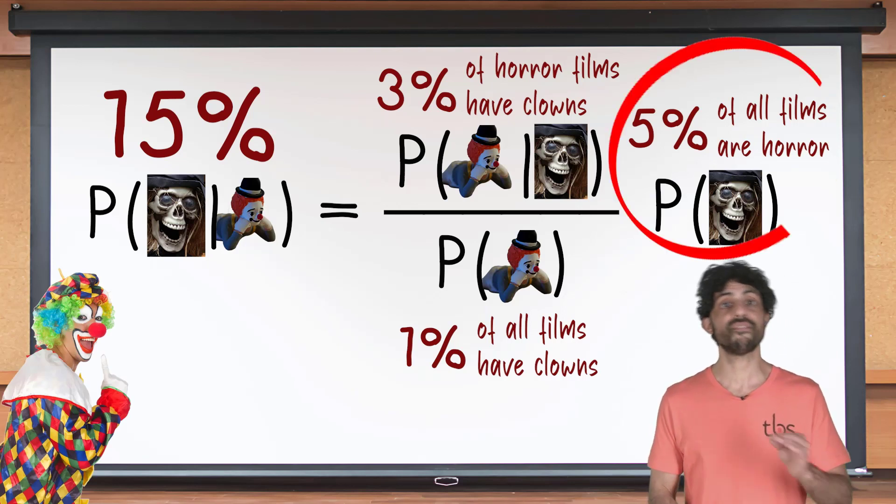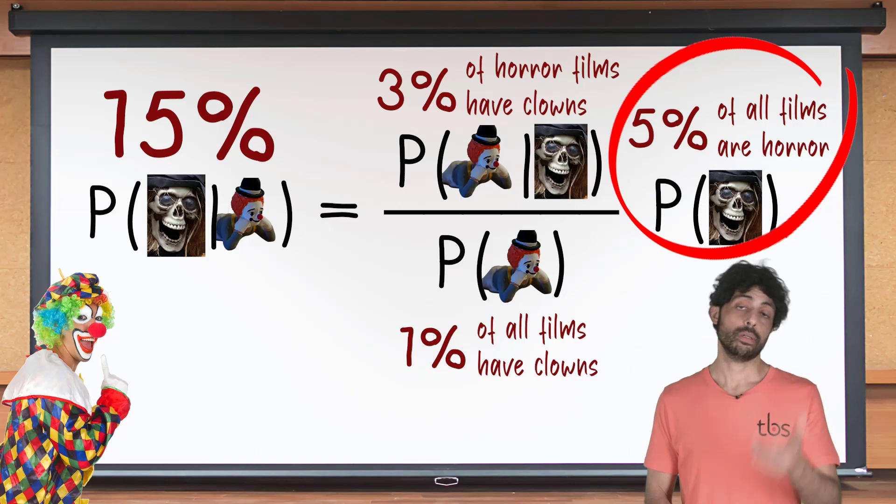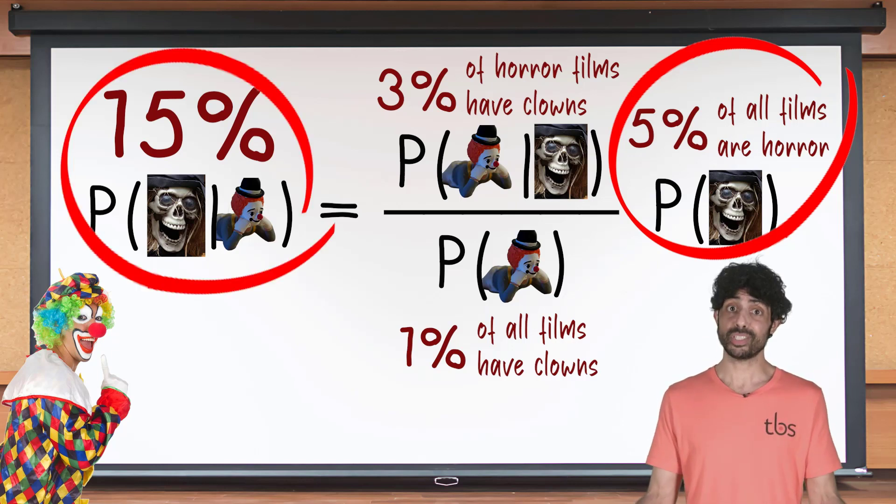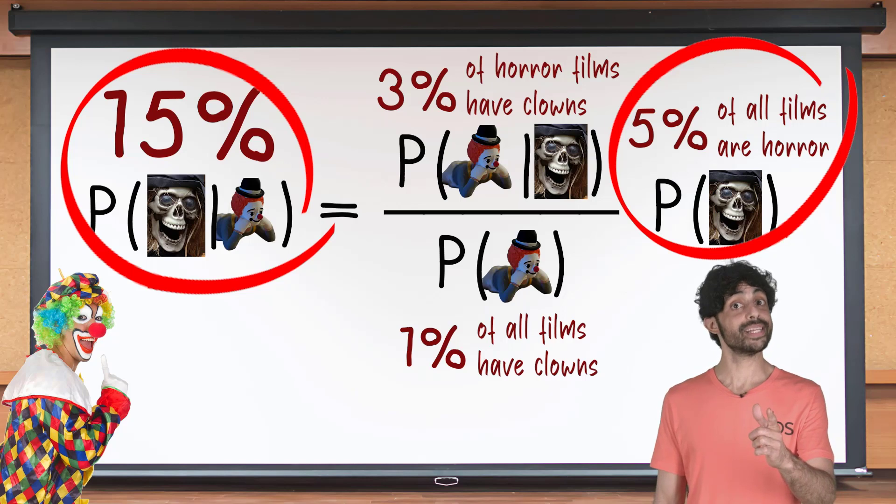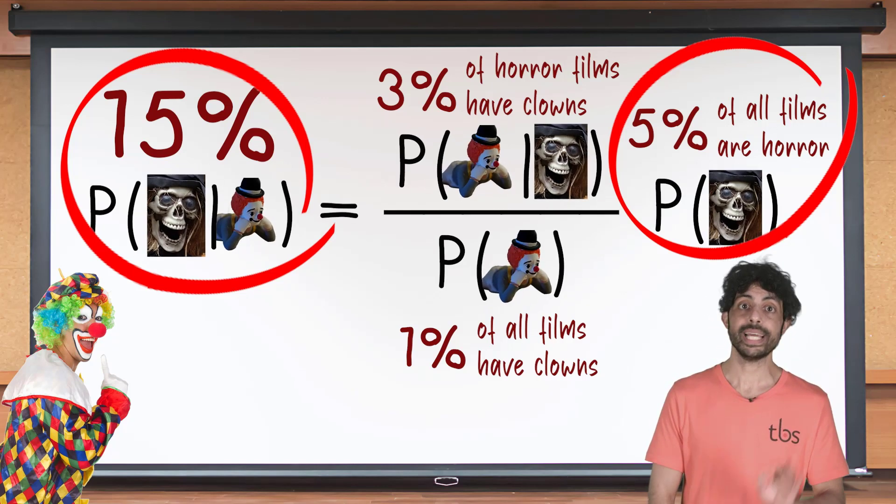Therefore according to Bayes rule, as soon as you see a clown on your TV, the probability of a film being horror is updated from five percent to only fifteen percent. And you thought it was much higher, didn't you? And the world was a scarier place than it is. And that's why you should update probabilities with this formula instead of your paranoia. Unless that clown has an axe, then trust your paranoia.